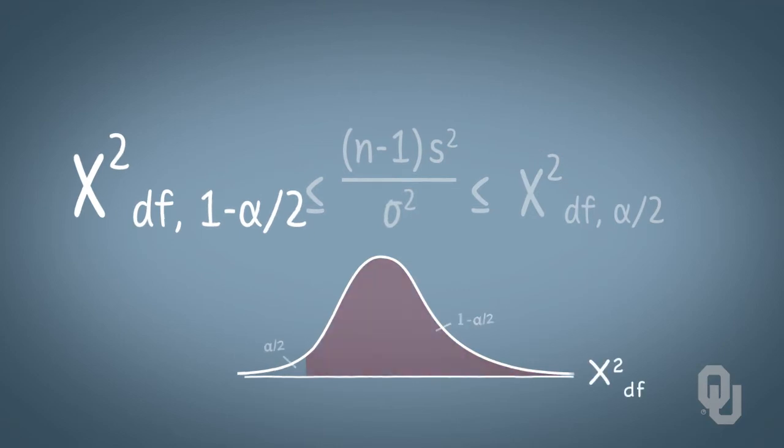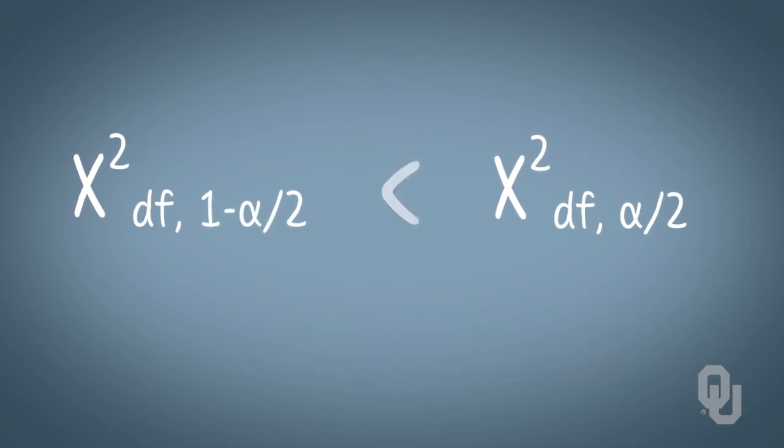Recall that chi-squared degrees of freedom, one minus alpha over two, is a value on the chi-squared axis associated with alpha over two in the lower tail, or one minus alpha over two in the upper tail. Naturally, chi-squared for this particular degrees of freedom, one minus alpha over two, is a smaller number than chi-squared for that degree of freedom, alpha over two. Therefore it is the lower bound of the interval.